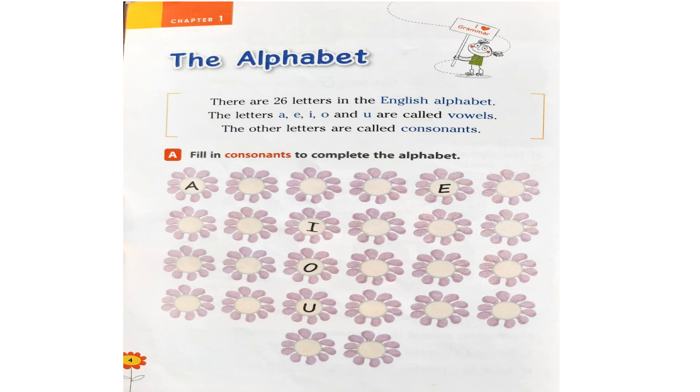How many letters are there in English? Yes, there are 26 letters in the English alphabet. The letters A, E, I, O and U are called vowels. The other letters are called consonants. Do you remember that? Yes.